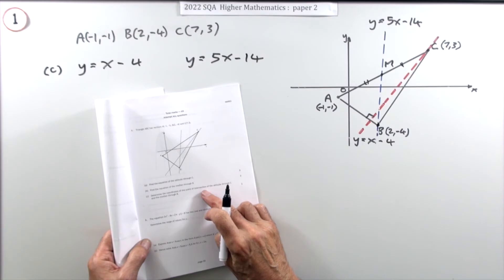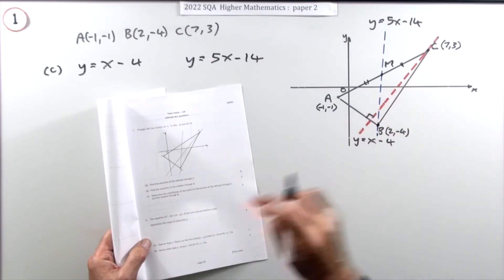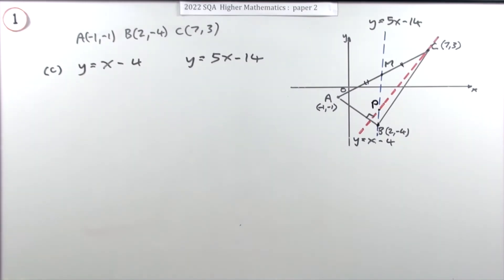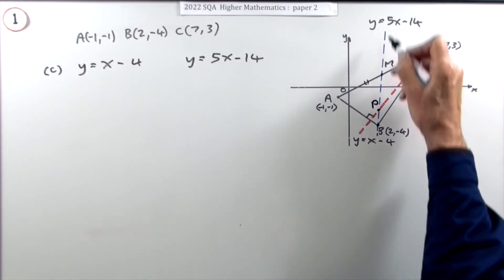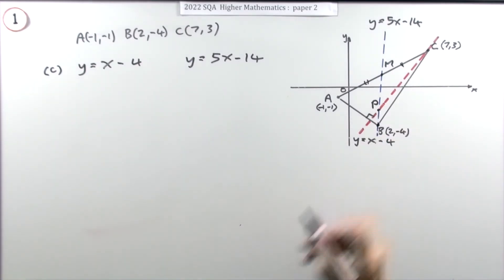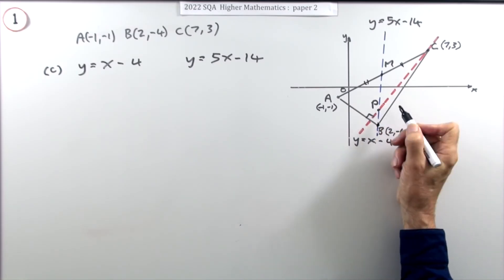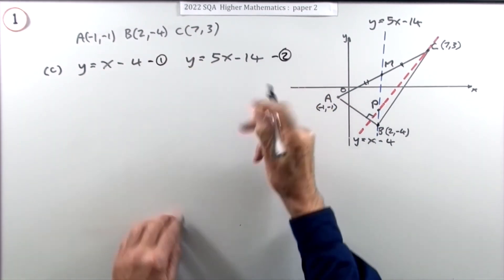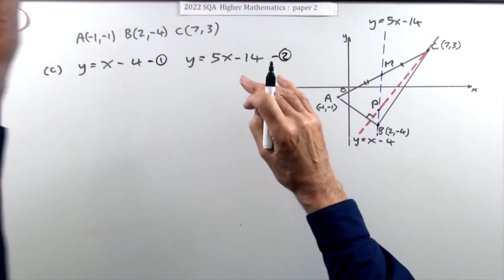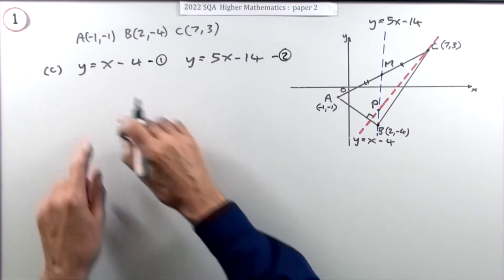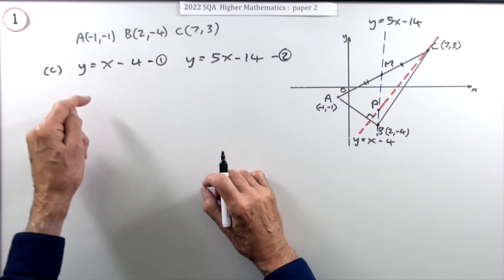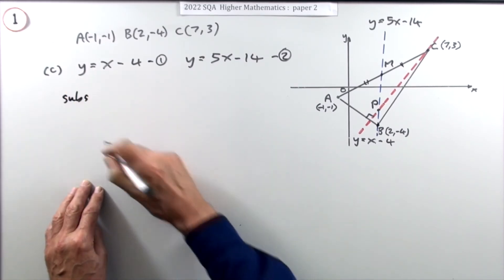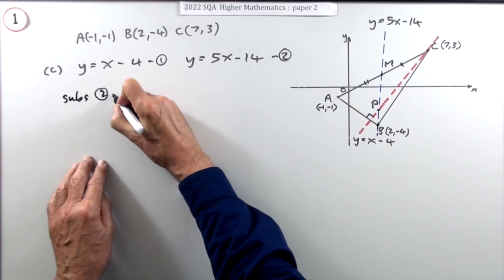Part c: determine the coordinates of the point of intersection of the altitude through C from part a and the median through B from part b. At the point of intersection, coordinates must satisfy both equations simultaneously. The best approach here is substitution, since both equations are already in the form y equals something.